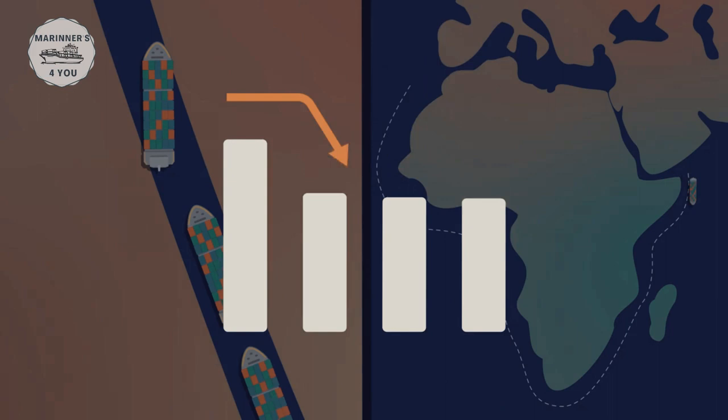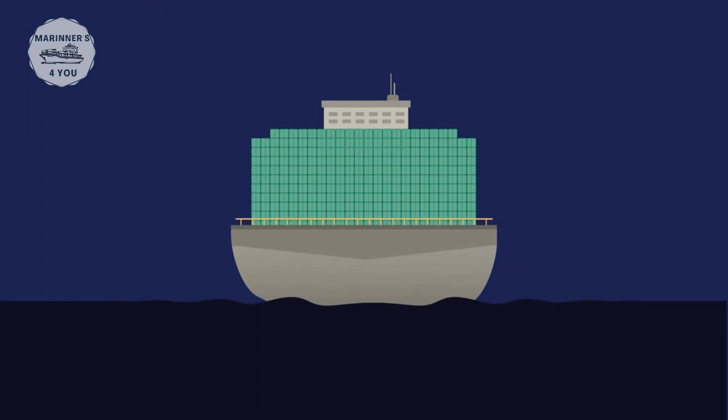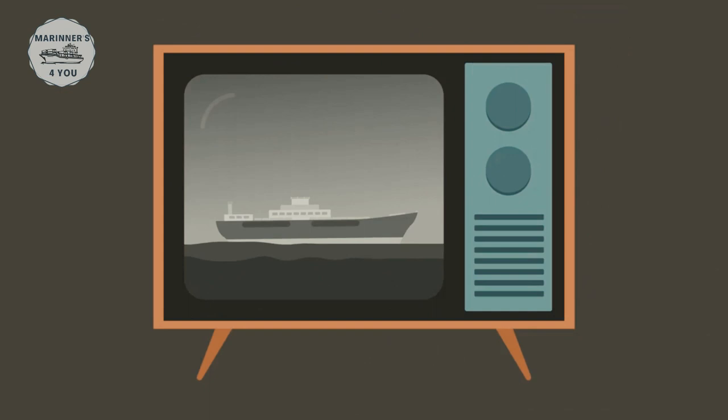One of the reasons for those accidents is that the container ships have become very large. In 1956, when the first version was launched, it could carry only 58 TEUs. That is, 58 containers.